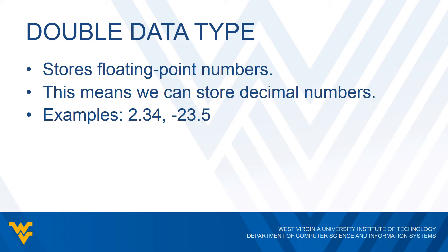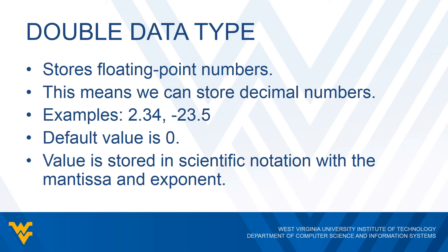The double data type works just like doubles in other programming languages, where we can store floating point numbers — numbers with decimal places. To give a couple of examples, we can have 2.34, negative 23.5, and all sorts of numbers that include decimal places. Just like the integer data type, the default value for a double variable in Visual Basic is zero — technically it's 0.0, but it's pretty much zero.